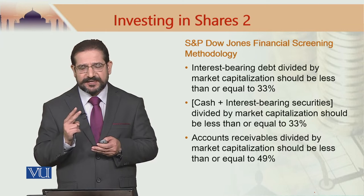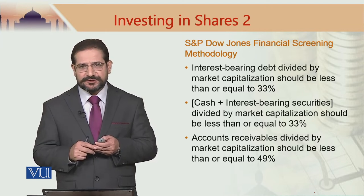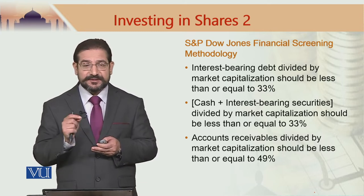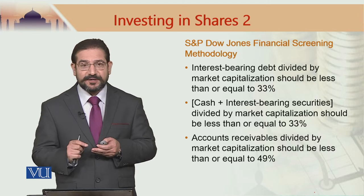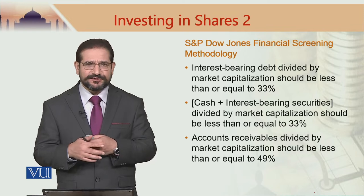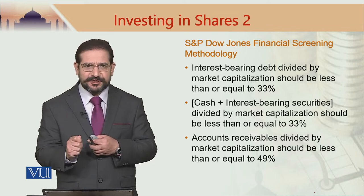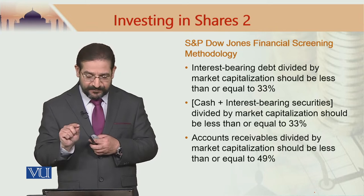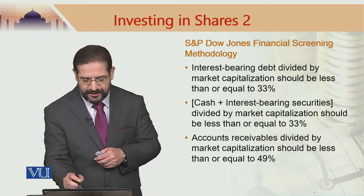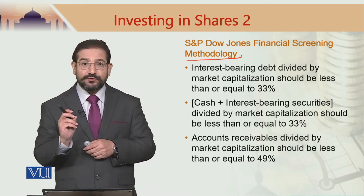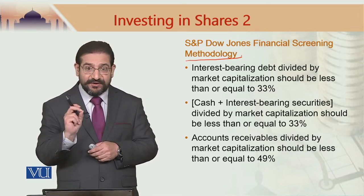Remember, we said there are two types of screens used by the players to pick up stock for stock picking in a Sharia-compliant way. One is a business screen, the other one is a financial screen. The business screen is applied before the financial screen. The objective of the business screen is to make sure that the company is involved in halal activity. When we are referring to these methodologies — by Dow Jones, by MSCI and so on — we are referring to the second screen called the financial screen.